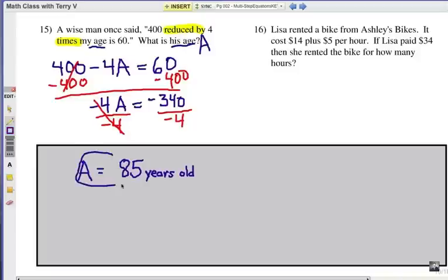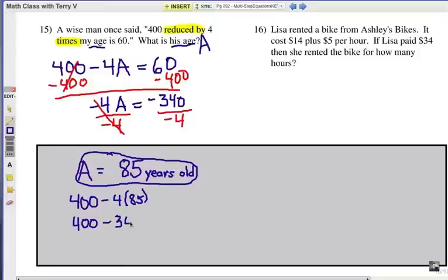So we should get 85 years old, a wise old man. Let's check it though. That's the last step. Always substitute it in. So 400 reduced by 4 times his age. We have to figure out what 4 times 85 is. And so 400 take away 340 does indeed give us 60, as mentioned in the question.